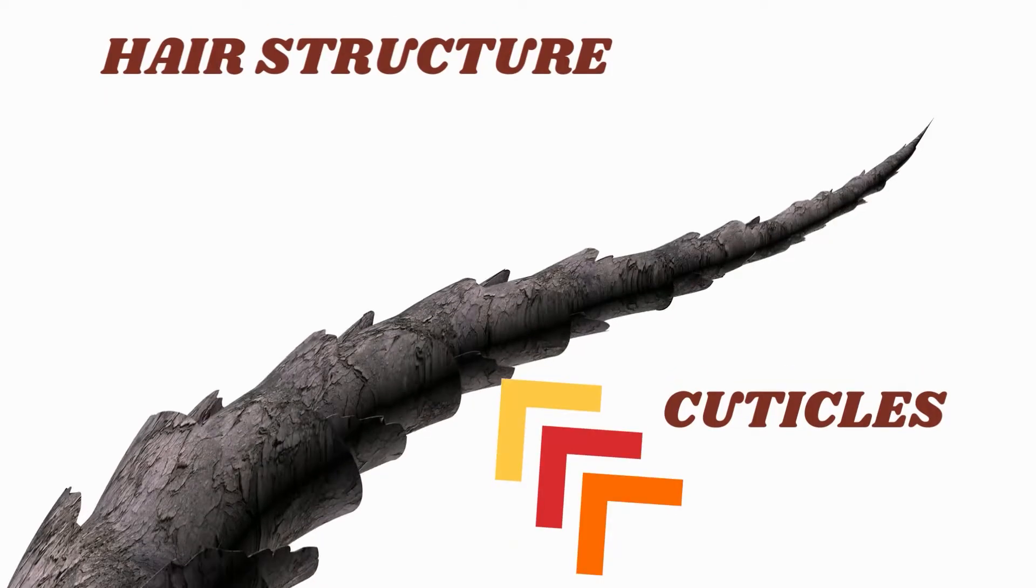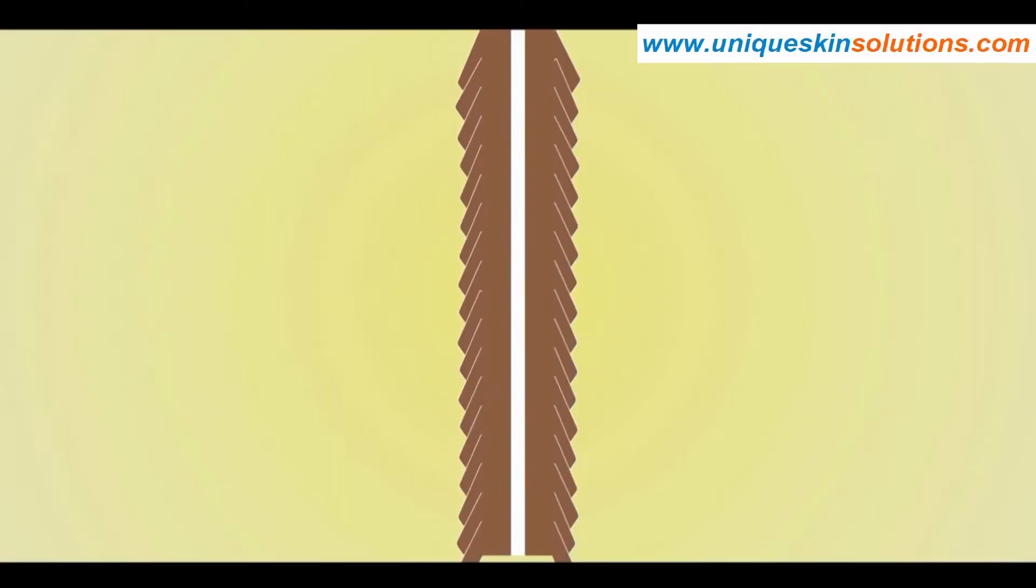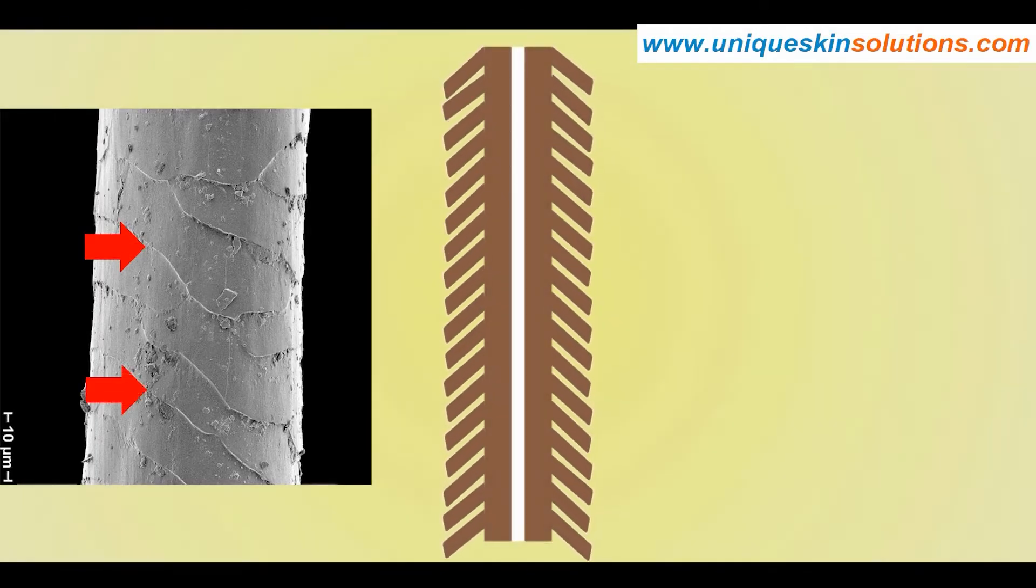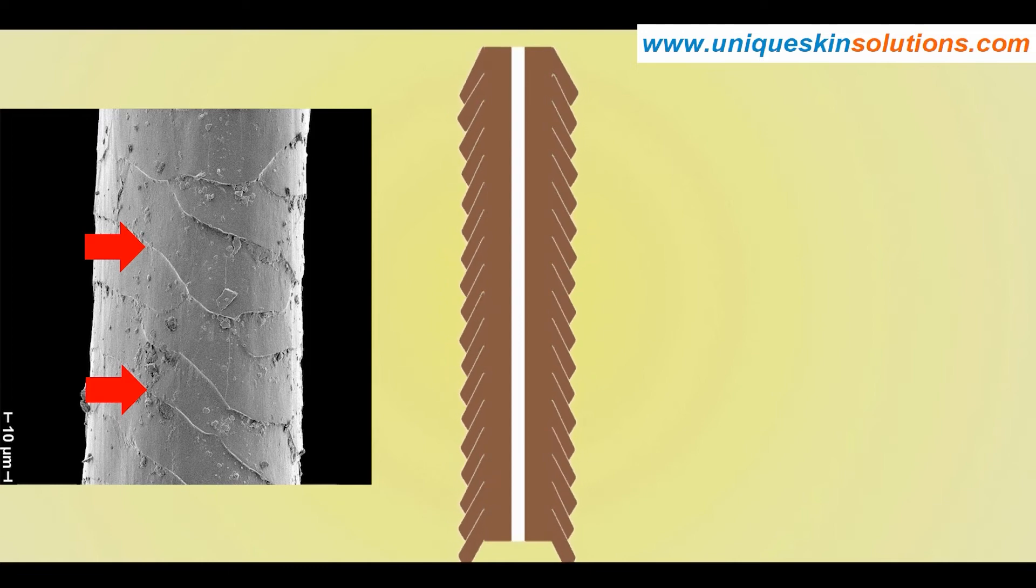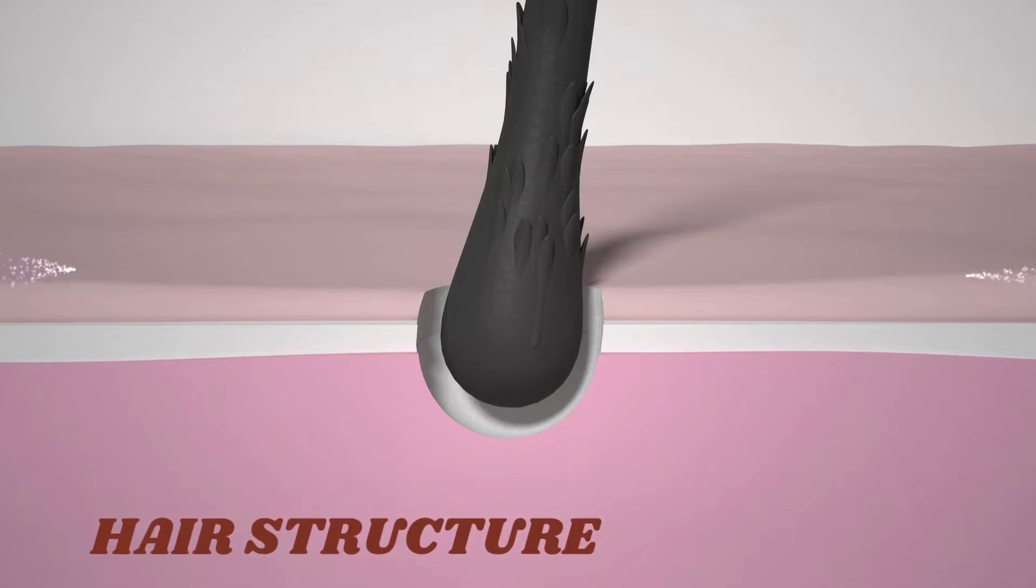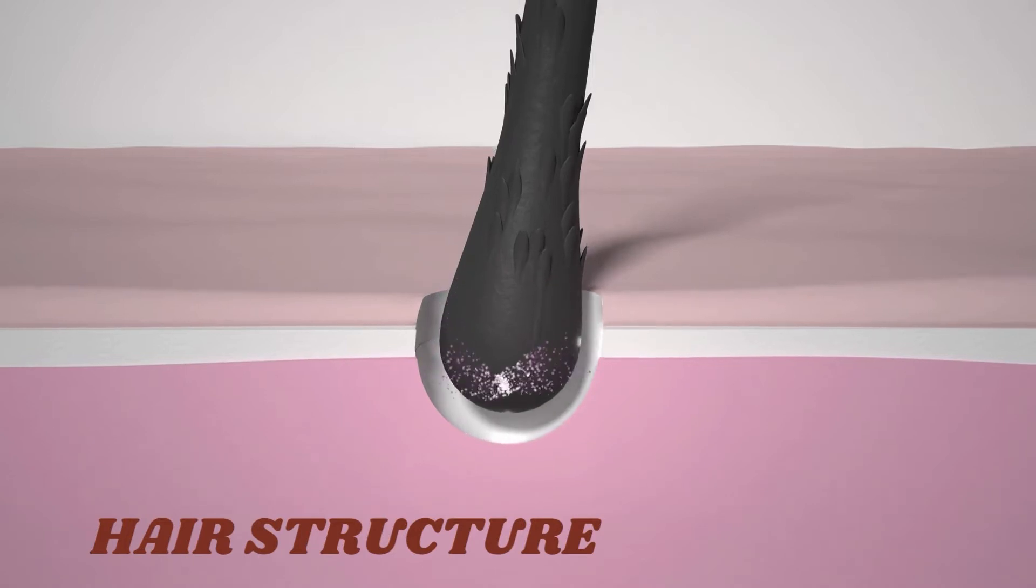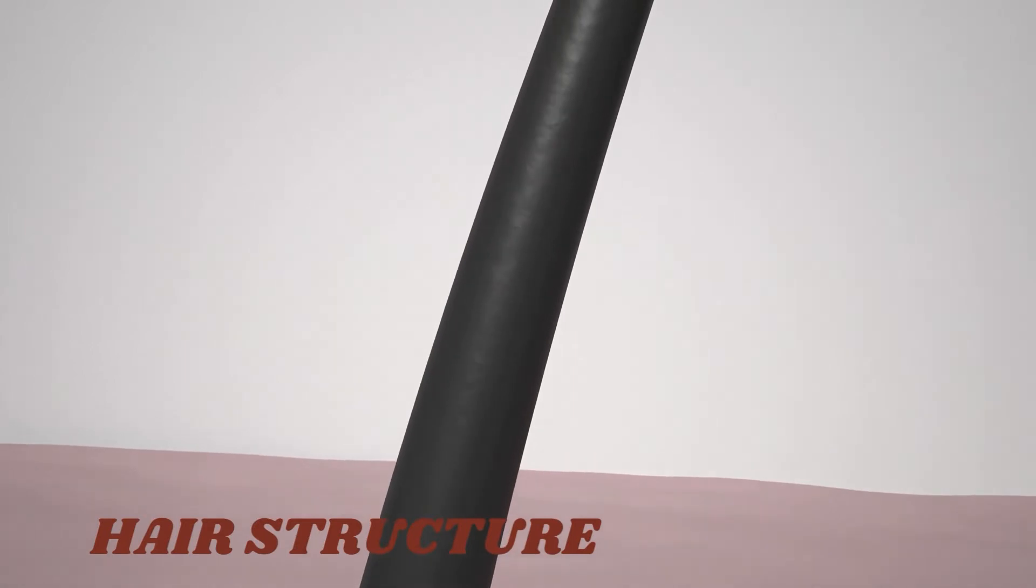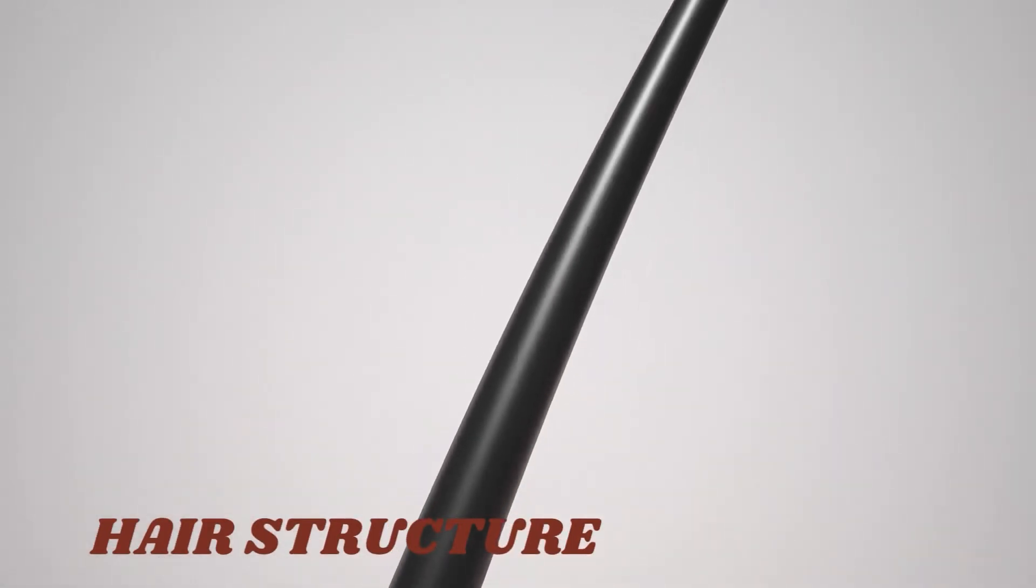The cuticle is composed of keratin and consists of layers of scales overlapping one another, just like tiles on a roof. The cuticle encircles the cortex and protects the core cortex. Normally, cuticles are transparent like fish scales. The hair appearance depends on the health of the cuticle. When the cuticle is strong and healthy, hair appears to be strong and healthy also.